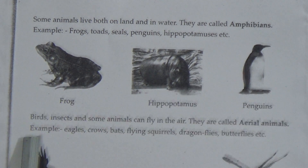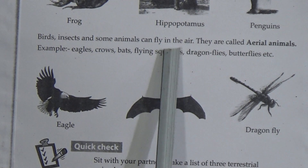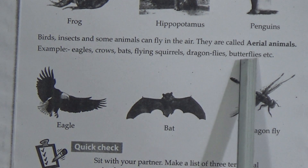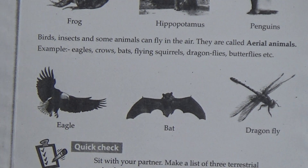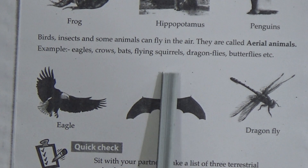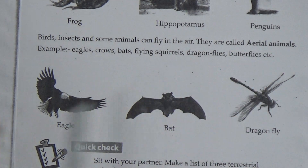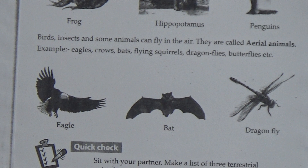Birds, insects and some animals can fly in the air. They are called aerial animals. Aerial spelling is A-E-R-I-A-L. Examples here are eagles, crows, bats, flying squirrels, dragonflies, butterflies, etc. And here is the picture of eagle, bat, dragonflies.